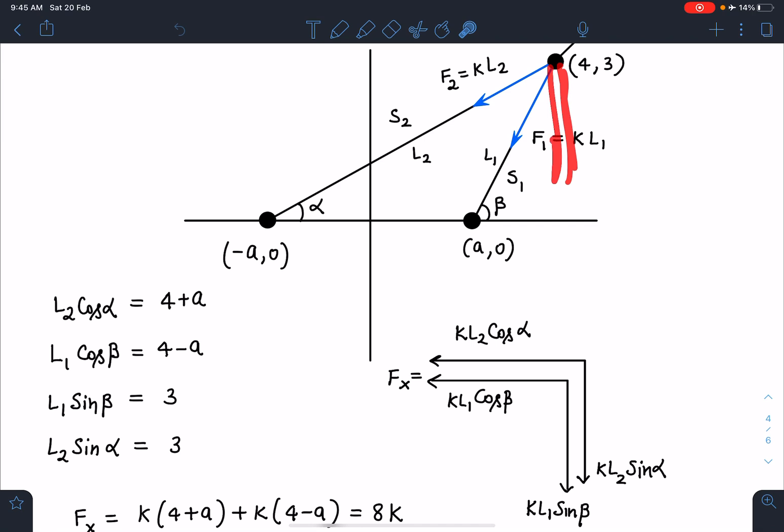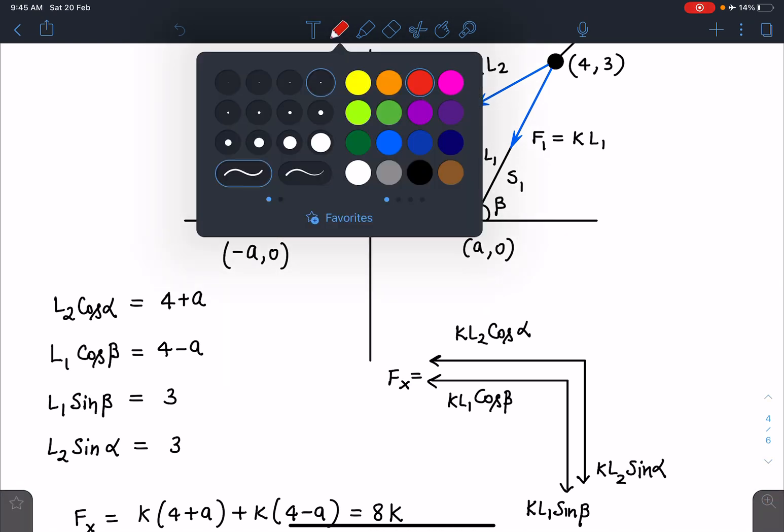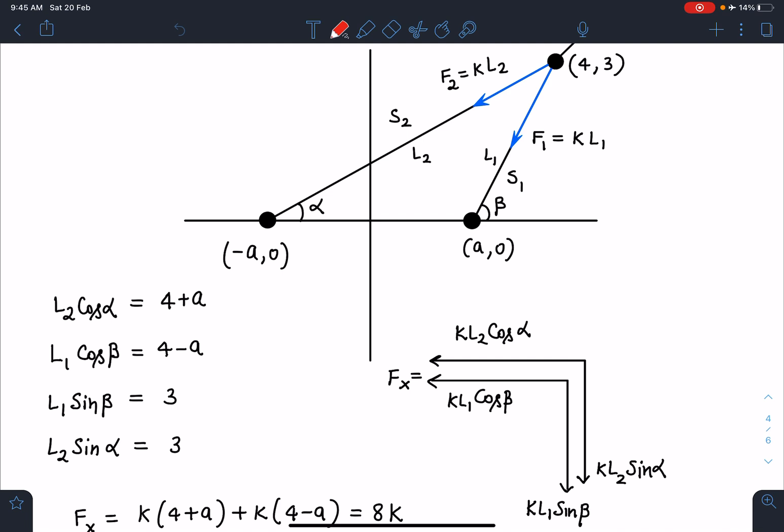The values are F1 sin β and F2 sin α, which means KL2 sin α and KL1 sin β. If you see this part very carefully, you can construct a right angle triangle here. This line L2 cos α is going to be this distance which is 4 and this distance is a, so it's 4+a.